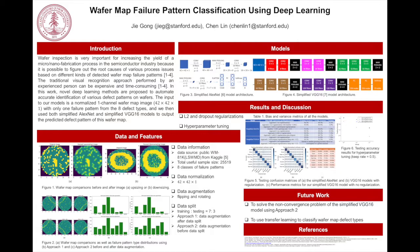Two different networks were explored. The first one is a simplified AlexNet and the second one is a simplified VGG16. The simplification does not mean reducing the number of layers, but reducing the number of filters on each layer. Because our images are much smaller and much simpler, and our goal is to classify only eight defect patterns, while AlexNet and VGG are targeting much more than eight.